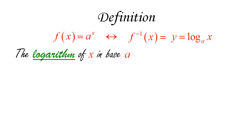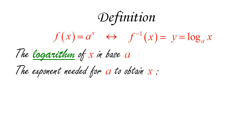What does the logarithm really represent? Because of the way we constructed it, it represents the exponent that we need for a in order to obtain x. The logarithm of a number in a certain base is the exponent to which we need to raise the base to get the number. For instance, the logarithm base 3 of 9 means: to what power do we raise 3 to get 9? The answer is 2. Computing the logarithm base 3 of 8 is more complicated.